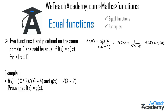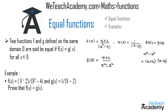Consider the function f(x) = (x + 2) / (x² - 4). We can write x² - 4 as x² - 2², which is in the form of the formula a² - b² = (a + b)(a - b). Comparing, we get a = x and b = 2. So we rewrite it as (x + 2) / [(x + 2)(x - 2)].